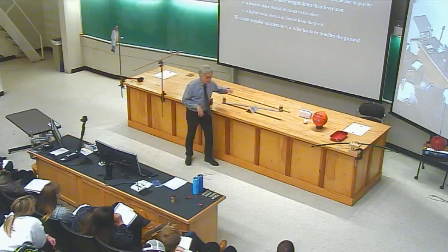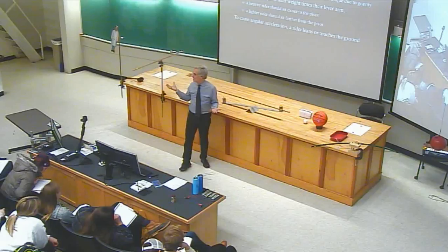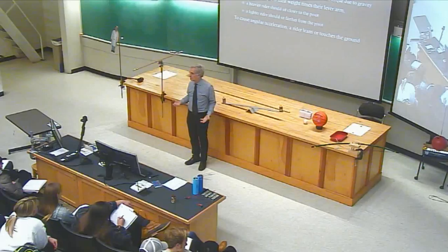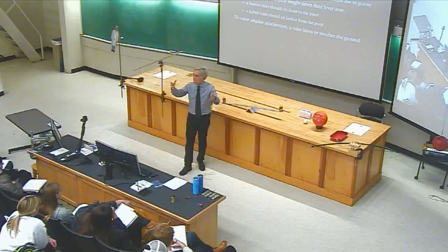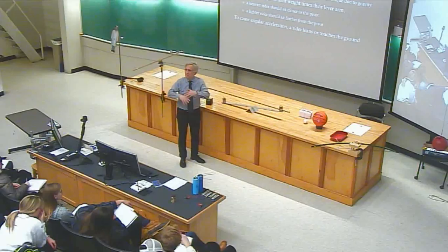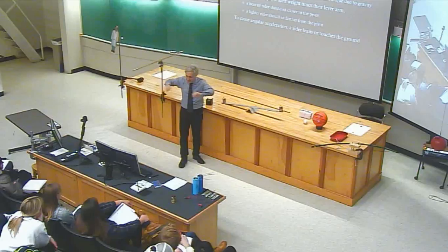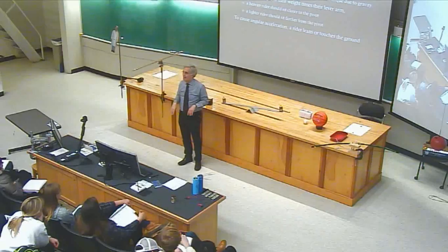Another way to think about balance: the seesaw with riders is perfectly balanced when the center of gravity of the whole system is located right at the pivot. Gravity then effectively pulls down right at the pivot — zero lever arm, therefore zero torque. Balanced objects are supported right at their center of gravity. Mobiles work this way: each portion of the mobile has its center of gravity placed right where the support is, so there's no torque.